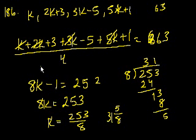3k plus 3k is 6k. Oh, 6k plus 5k is 11k. I don't know what I was thinking. That's 11k. And then you have 3 minus 5, which is minus 2, plus 1.